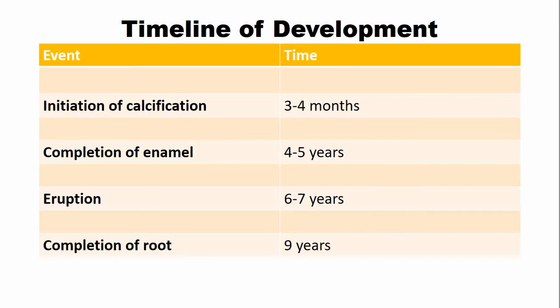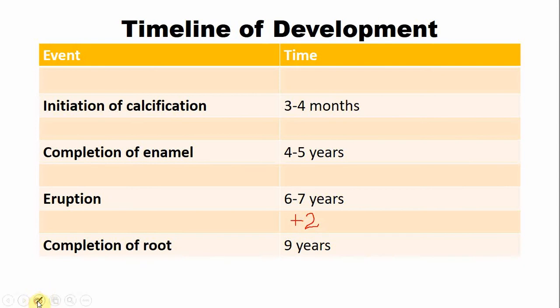The timeline of development: the mandibular central incisors start calcifying — mineralization of this tooth begins at the age of 3 to 4 months. The enamel is completed by the age of 4 to 5 years, and the tooth emerges into the oral cavity by the age of 6 to 7 years. When the tooth emerges into the oral cavity, only two-thirds of the root is formed. The remaining root is completed if you add plus 2 years — approximately 9 years. So the completion of root is at the age of 9 years.